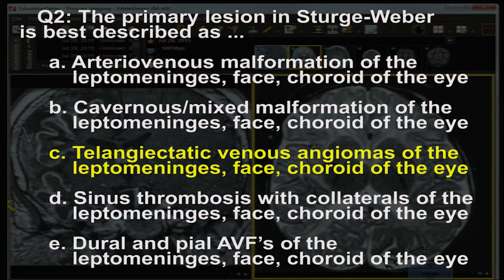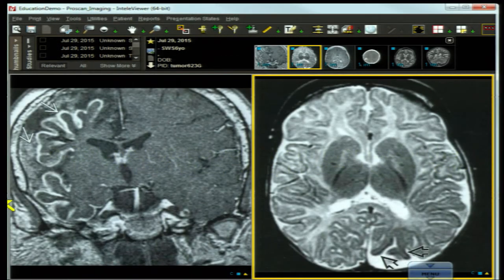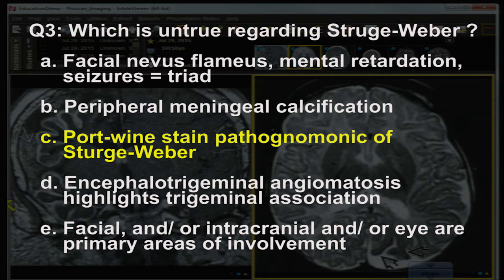Maffucci's syndrome involves multiple hemangiomas, not vascular telangiectasia of the leptomeninges. Gorlin's syndrome or basal cell nevus syndrome is associated with intracranial neoplasms and skeletal manifestations. For question two, the primary lesion in Sturge-Weber is best defined as answer C — telangiectatic venous angiomas of the leptomeninges, face, and choroid of the eye. Sinus thrombosis with collaterals and dural-pial AVFs are totally inappropriate choices.